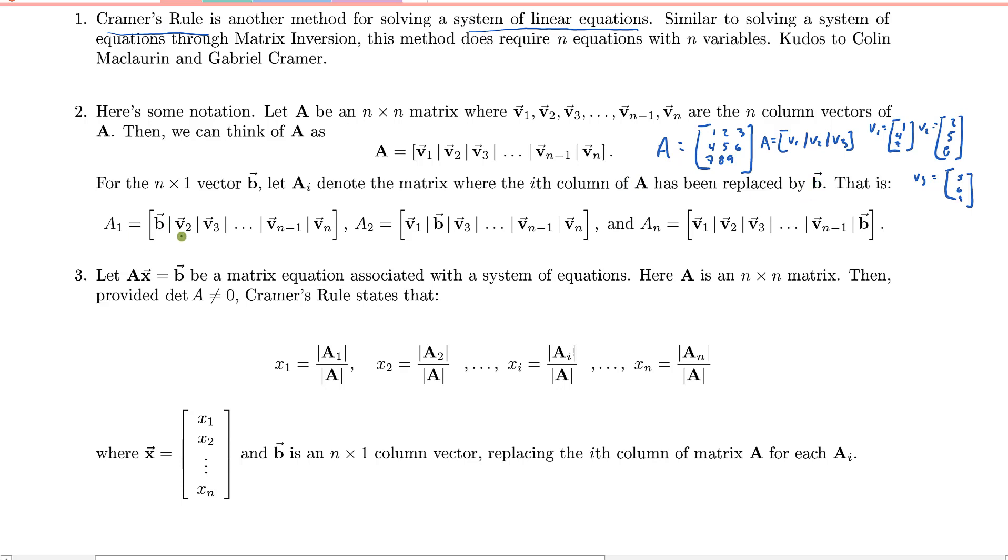So for example, A1 would be, notice that the columns here are the same, V2, V3, Vn-1, Vn, but we've replaced in A1, we've replaced the first column with the column vector B. Likewise, in A2, we've replaced the second column with the vector B, and all the remaining columns are the same in A.